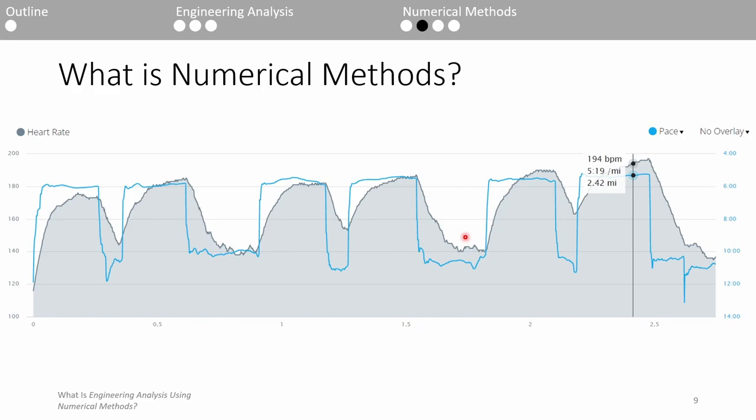That's because the heart rate monitor doesn't continually check my heart rate. Rather, it records my heart rate once every 7 milliseconds or so. The graph basically plays connect the dots with all the collected data, which contributes to the plot's jerkiness.